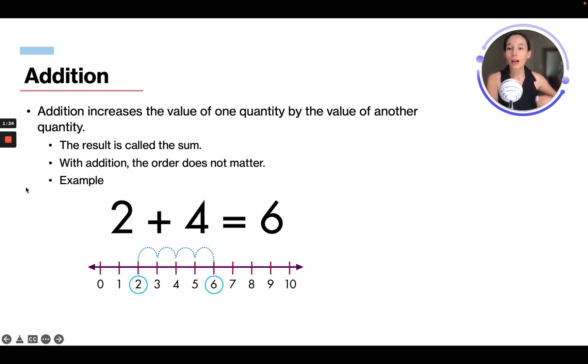Alright, so addition. Addition increases the value of one quantity by a value of another quantity. The result is called the sum, and with addition, the order does not matter. So for example, 2 plus 4 equals 6. And we can see if we start at this 2 and we go ahead 1, 2, 3, 4, we are at 6.